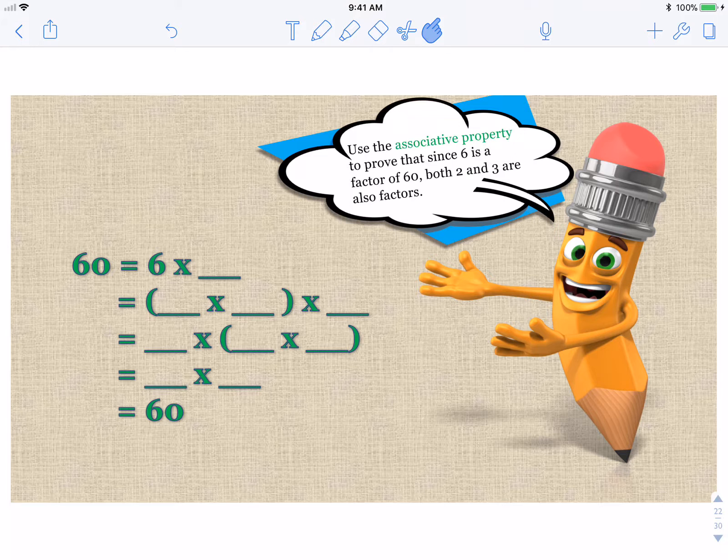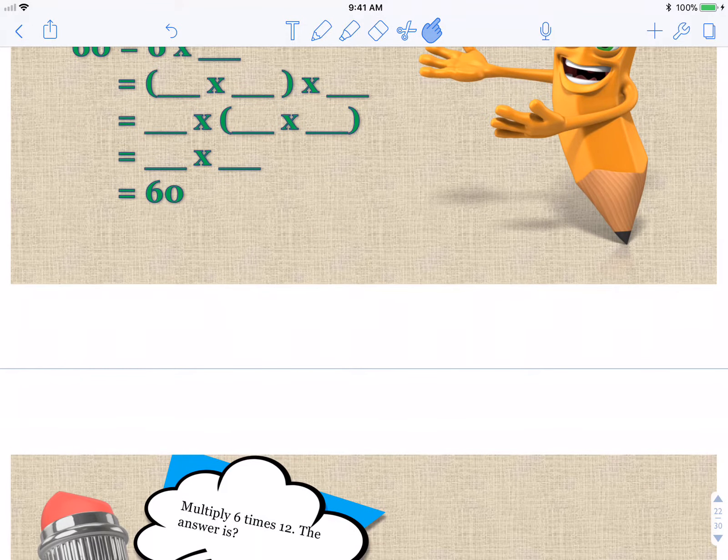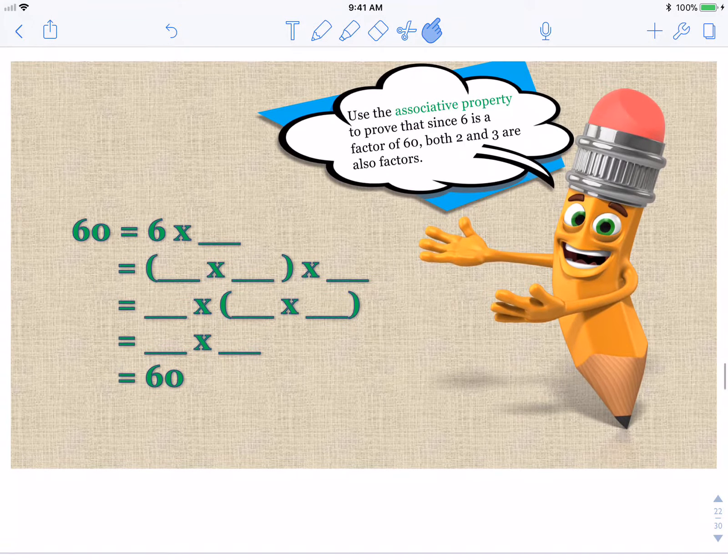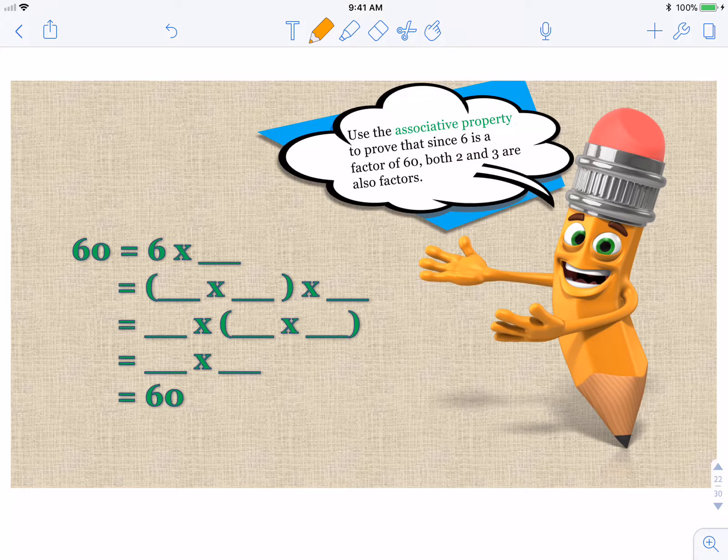Okay, it's called the associative property. Use the associative property to prove that since 6 is a factor of 60, both 2 and 3 are also factors. So go ahead and fill in the blanks and see if 2 and 3 are also factors of 60. We know they are. Now you're going to prove it. So pause and prove.